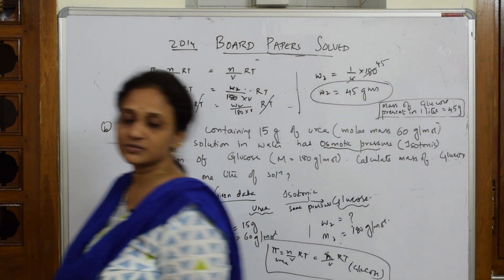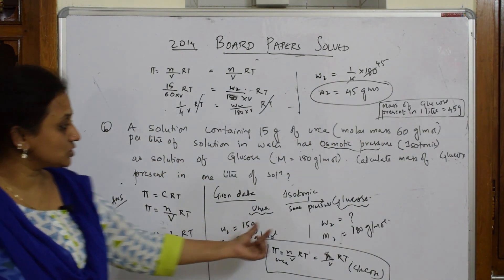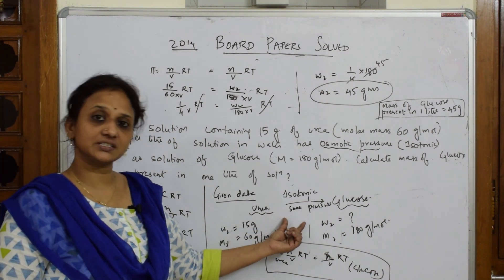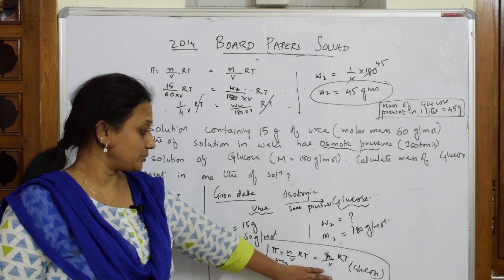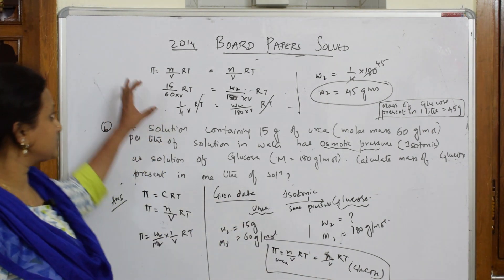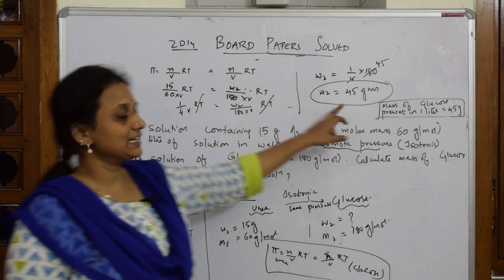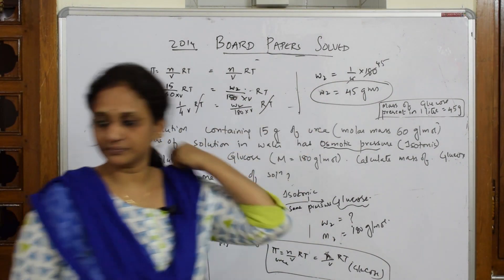The key concept here is: isotonic solution is given, that's why I equated the osmotic pressures. After equating, substitute the values; after substituting, calculate the weight. That's all you need to remember for this type of problem.